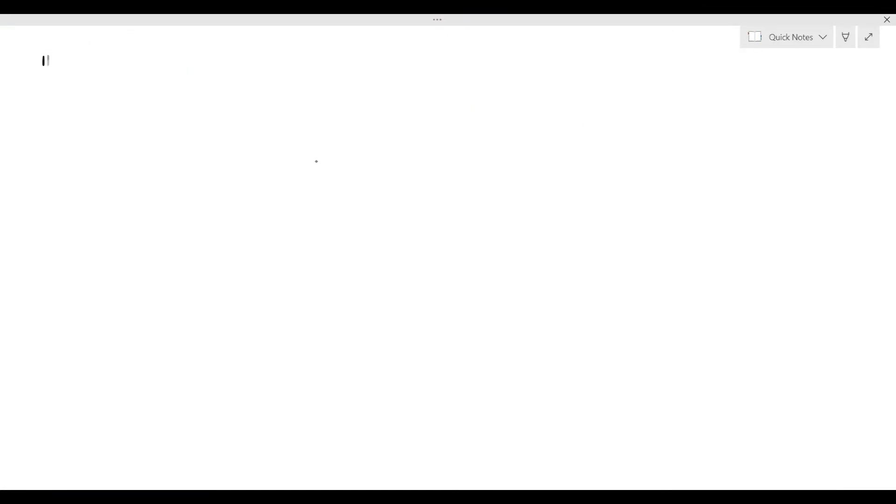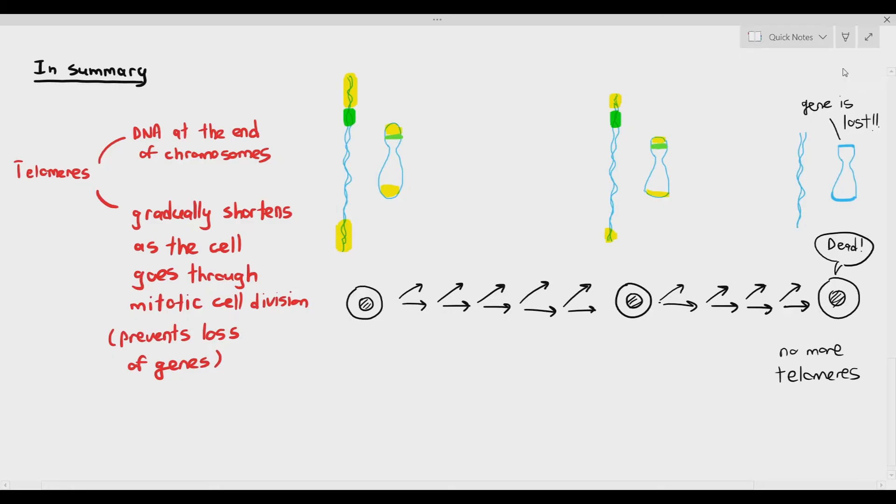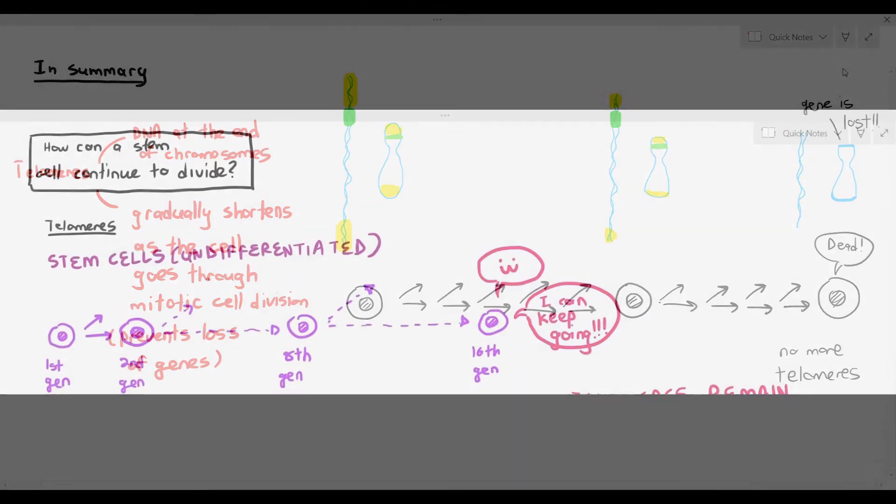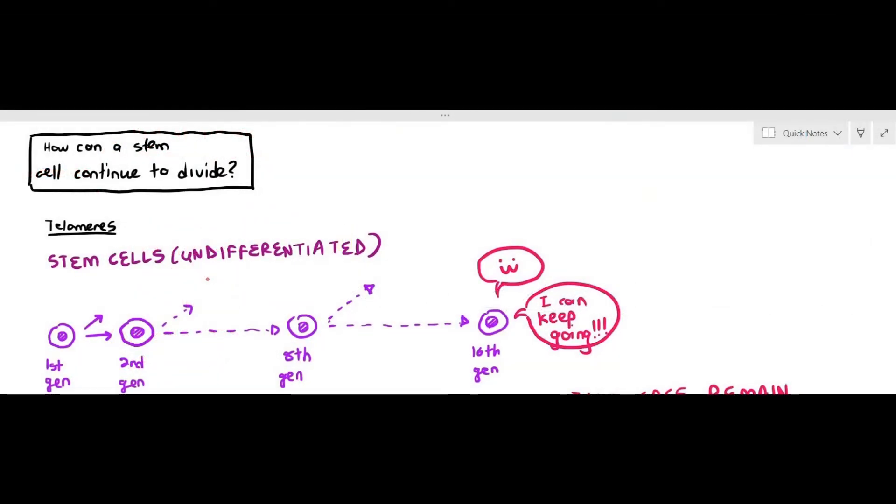So how can a stem cell continue to divide? Because when you looked at the previous video on telomeres, we understood a concept where we said that when a cell continues to divide, it loses telomeres and eventually the cell loses its vital genes or important genes and the cell ceases to function and die. But stem cells are this weird group of cells that can just basically continue dividing theoretically an infinite amount of times. So how is that possible?